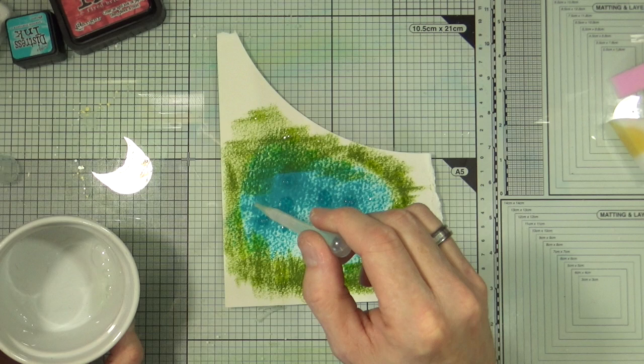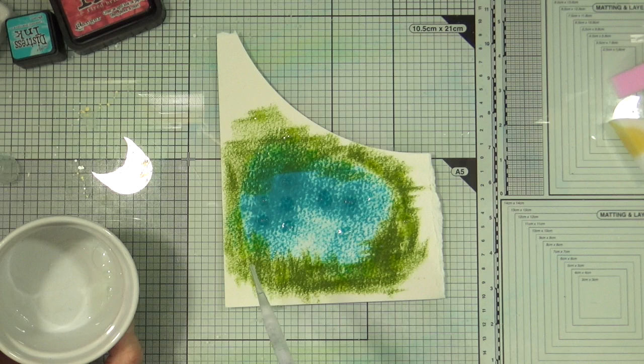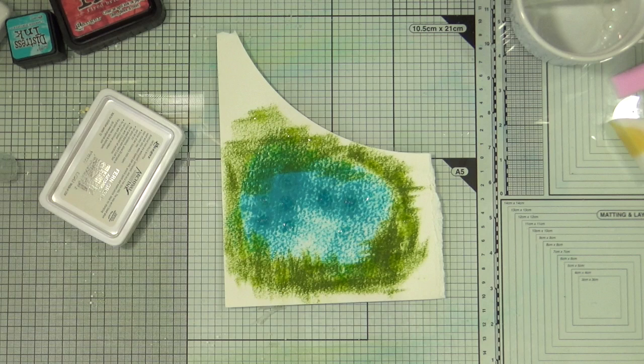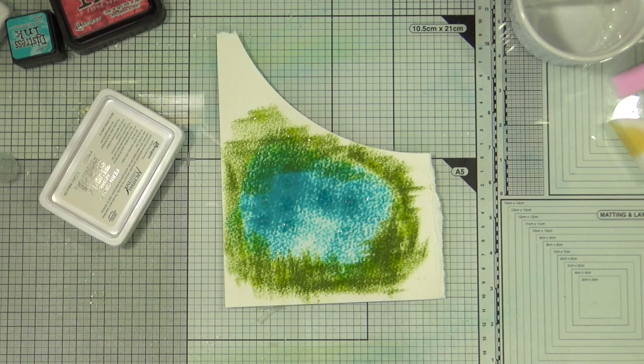And it doesn't look as though anything's happening. Now there's a little bit, tiny, tiny bit of movement, but it's very, very subtle. So let's try heat setting it, let's try activating it with... Get rid of that glare. That's not much better, is it? That's better. Let's try it with a heat gun and see what happens.